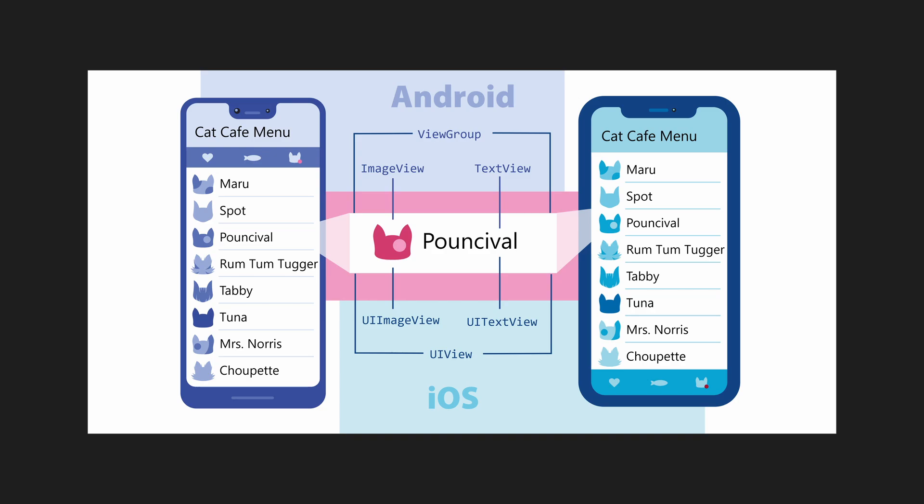A prime example of this would be React Native, which enables the usage of React for making mobile apps. It's important to realize that apps made with React Native are not web views packaged as mobile apps — if you wanted to do something like that, you would use something like Capacitor.js, which actually wraps a web view as a mobile app.